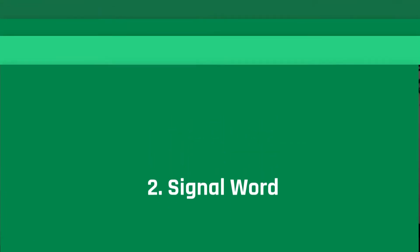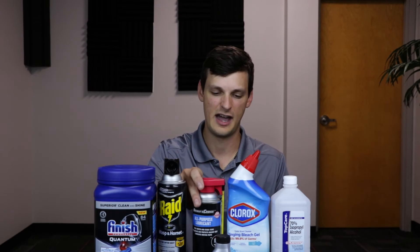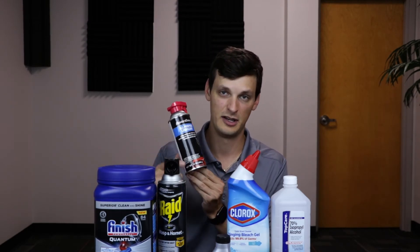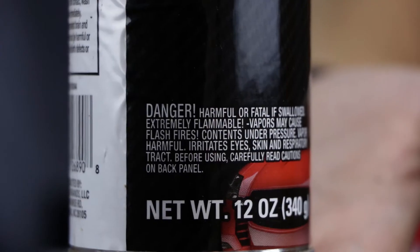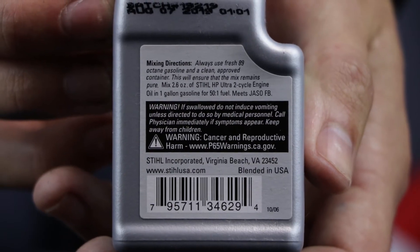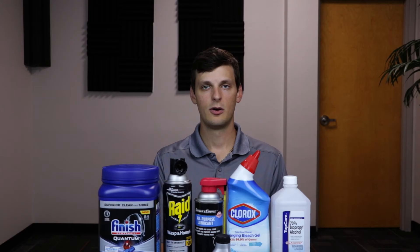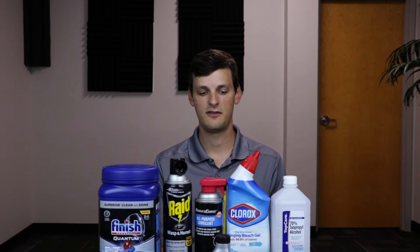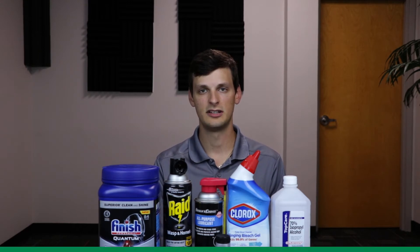A signal word is used to notify the severity of a hazard. There are only two words that may take this place on a label: danger or warning. Only one word will appear on each label to ensure the severity of the chemical is clearly communicated.